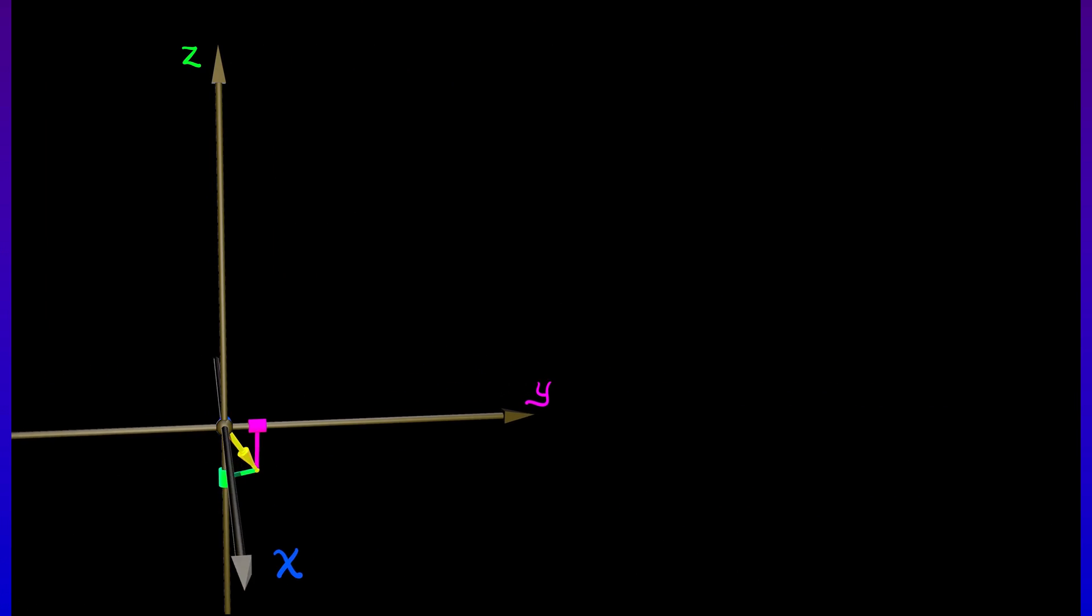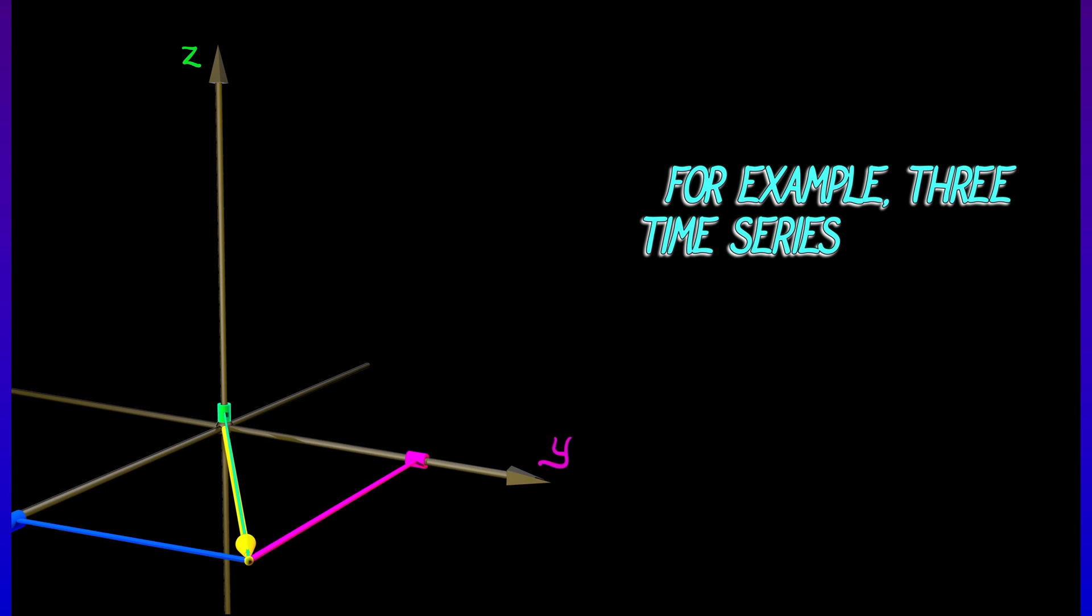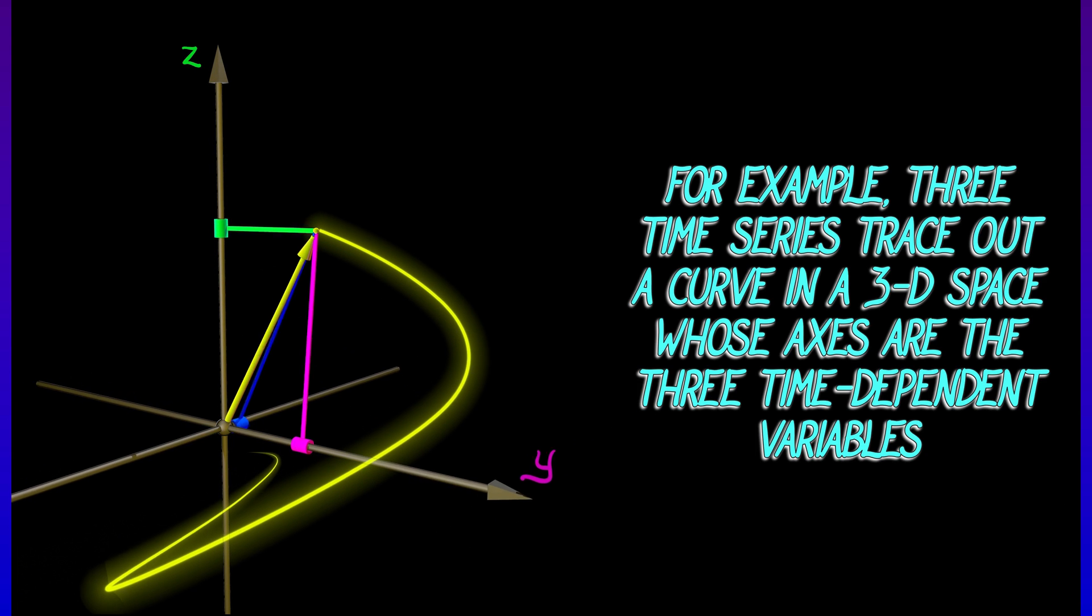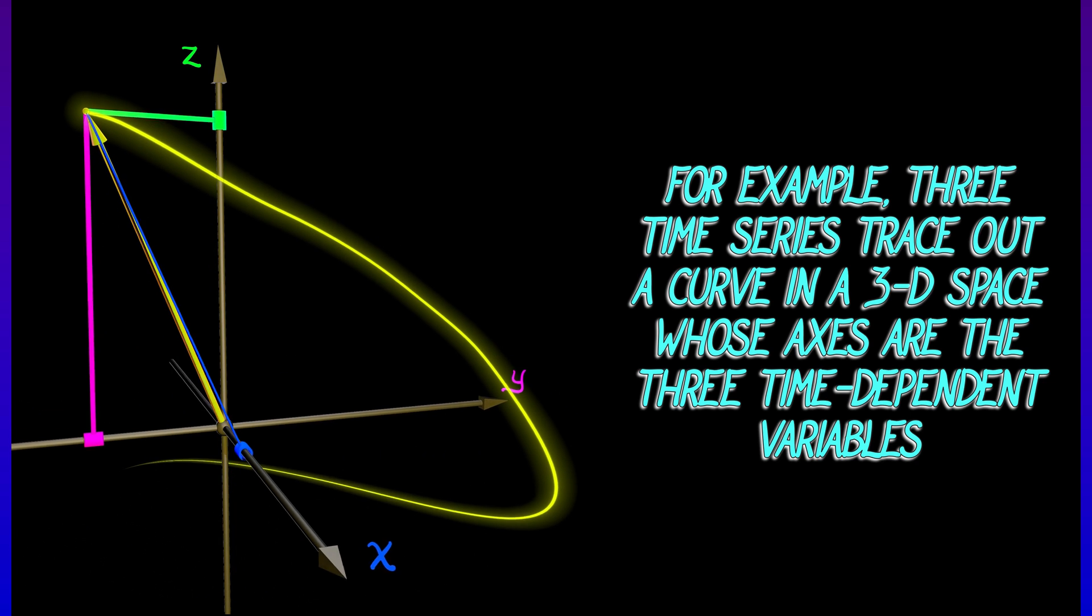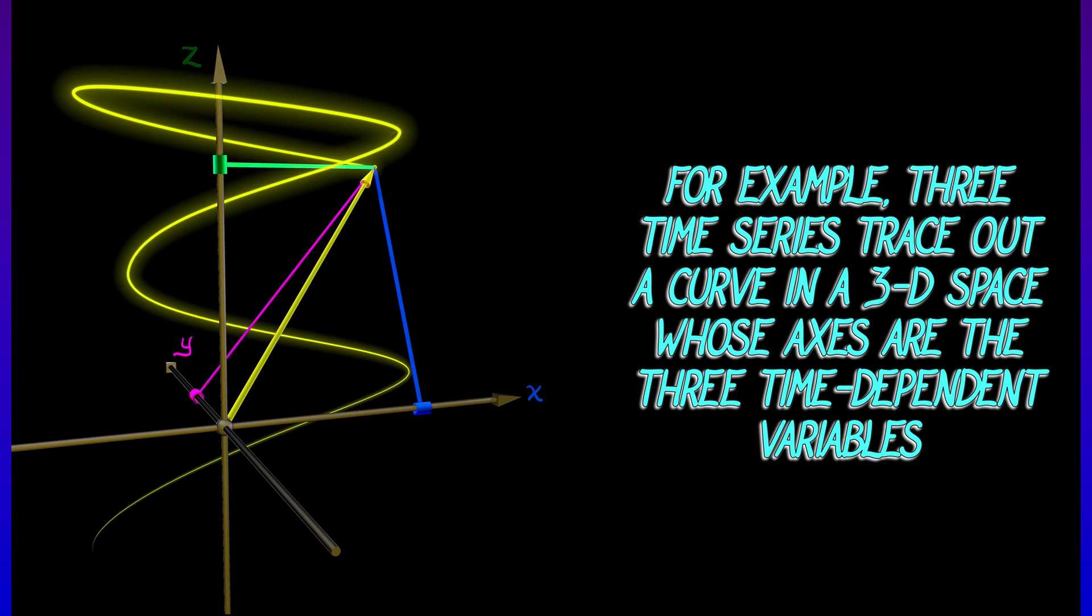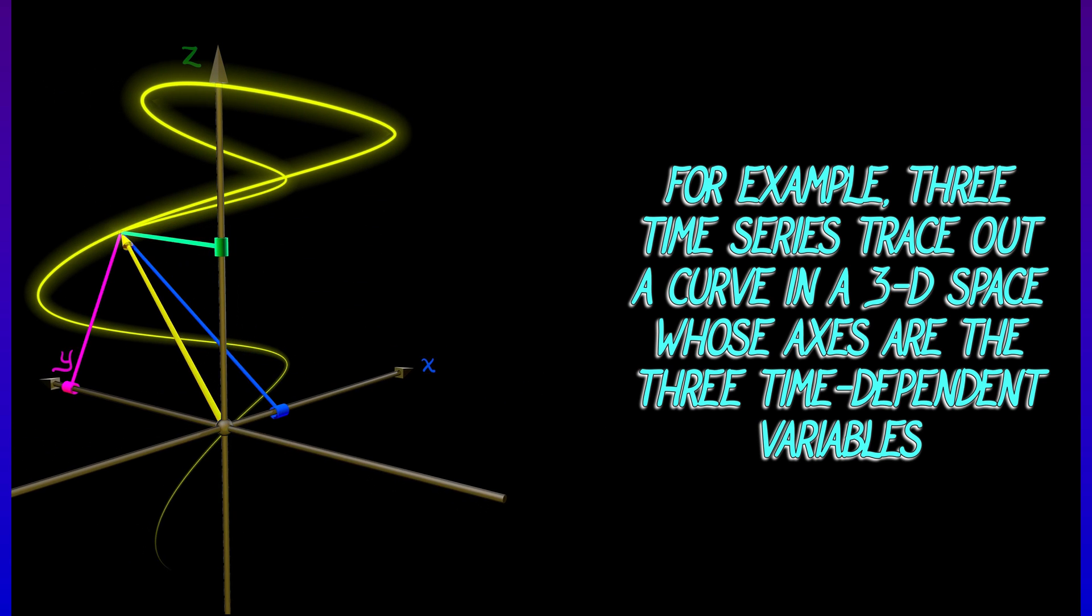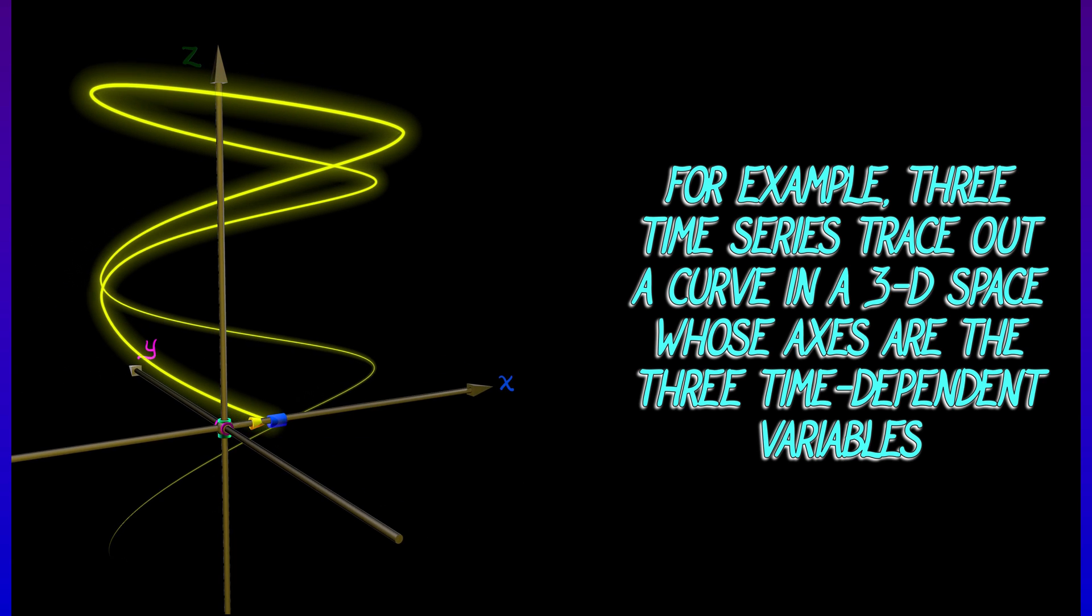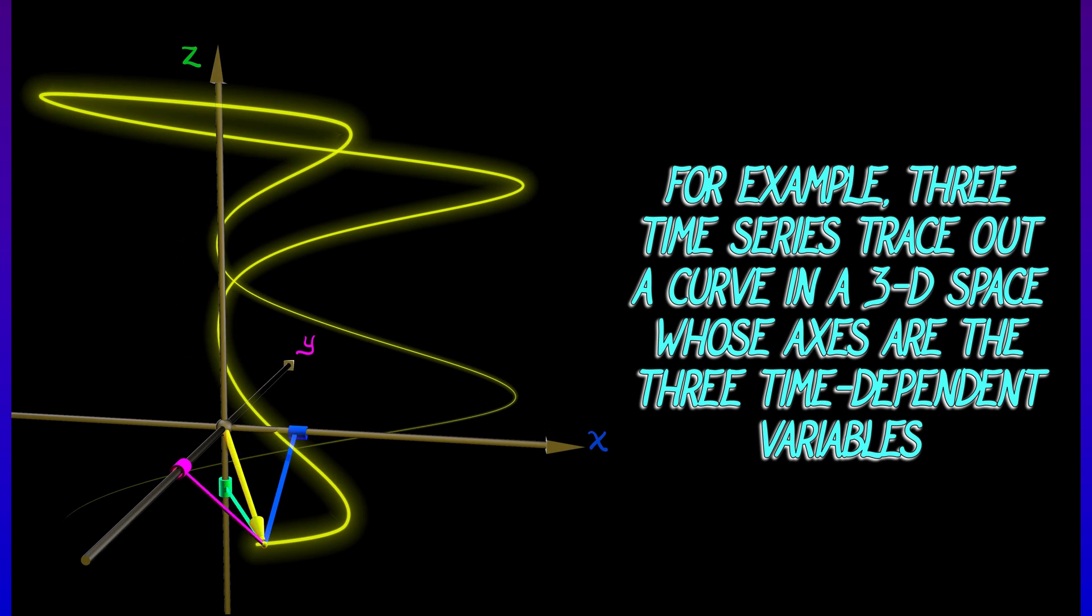For a simple example, consider three time series. Let's call them x, y, and z. And each of them is evolving in time. Now, if we plot x of t, y of t, z of t, this traces out a curve in three-dimensional space. Okay, so that's a simple example with just three time series.